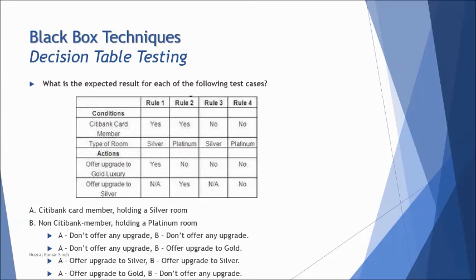So if you look at the last option again, B says: do not offer any upgrade. Even if you get the partial answer correct, do not rely on that alone. ISTQB from the new syllabus is very tricky — they can always twist your answer. I would love to look at some of those questions at the end of this chapter, so pay attention. That's the right answer — the last one.